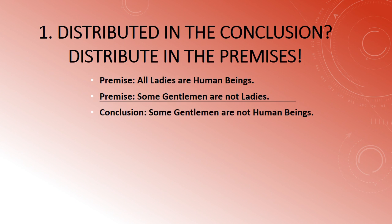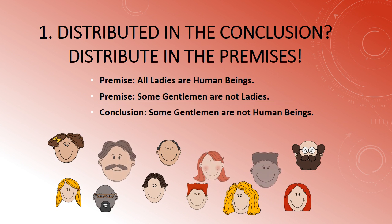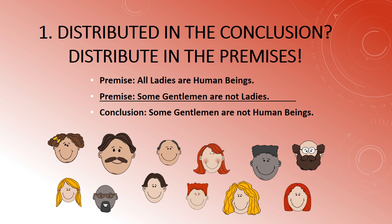If you distribute a term in the conclusion, you'd better have distributed it in the premises at least once. Look at this argument: 'All ladies are human beings and some gentlemen are not ladies — does it follow that some gentlemen are not human beings?' The premises are true but the conclusion is ridiculously false. The problem is the term 'human beings' in the conclusion — it is distributed there, since O sentences distribute their predicates. But was 'human beings' distributed in premise one? No — A sentences do not distribute their predicates.